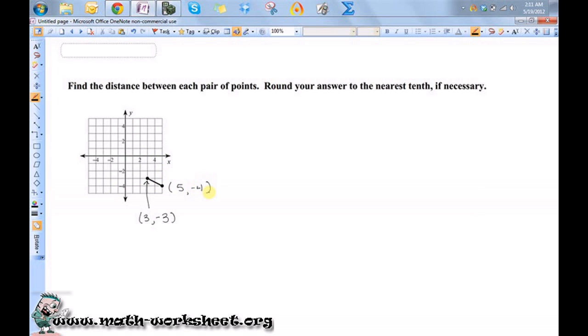So to find the distance between those two points, I'm going to need to use the distance formula, which is equal to the square root of x2 minus x1 squared plus y2 minus y1 squared.